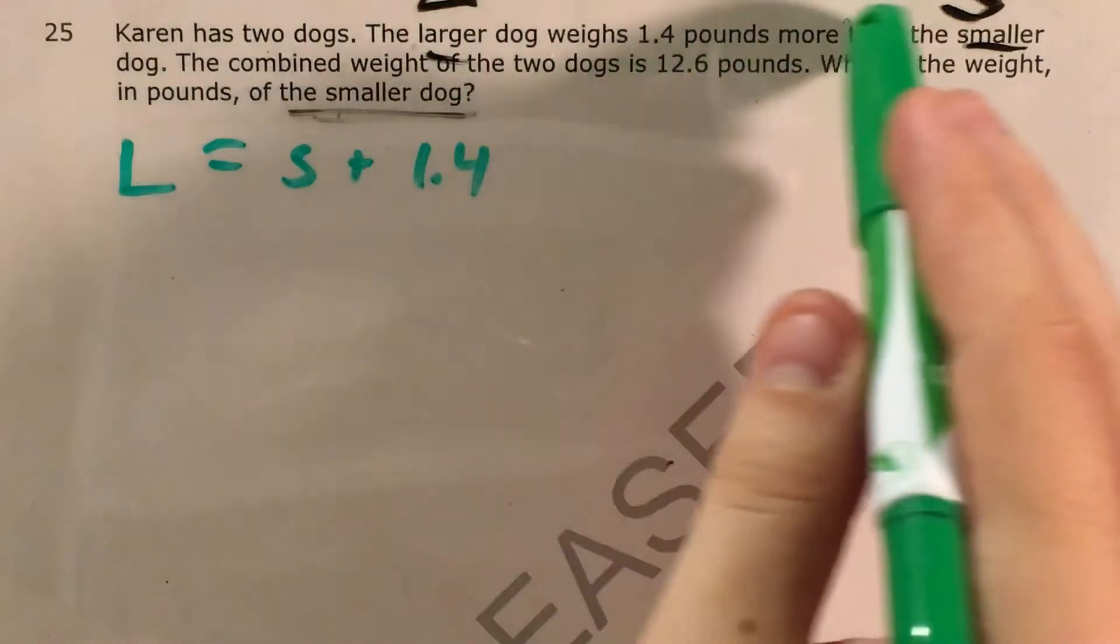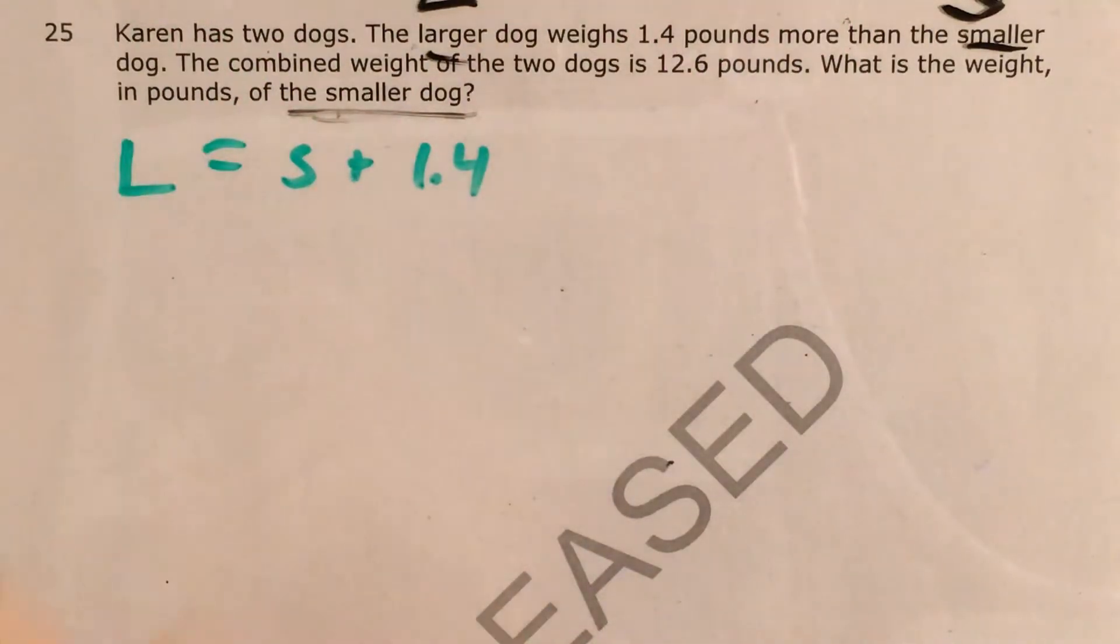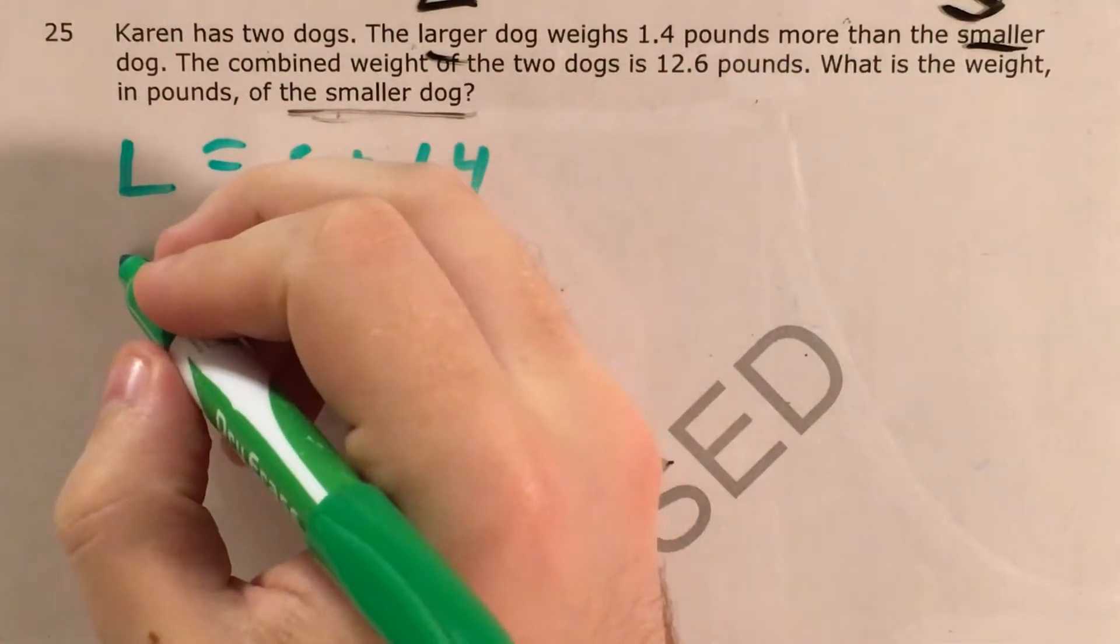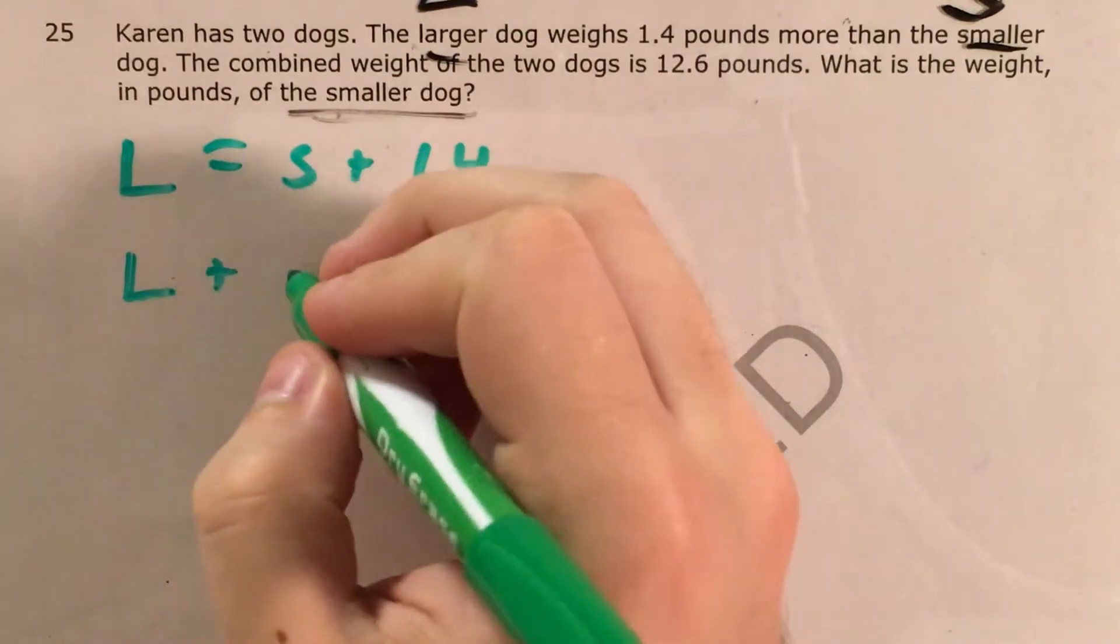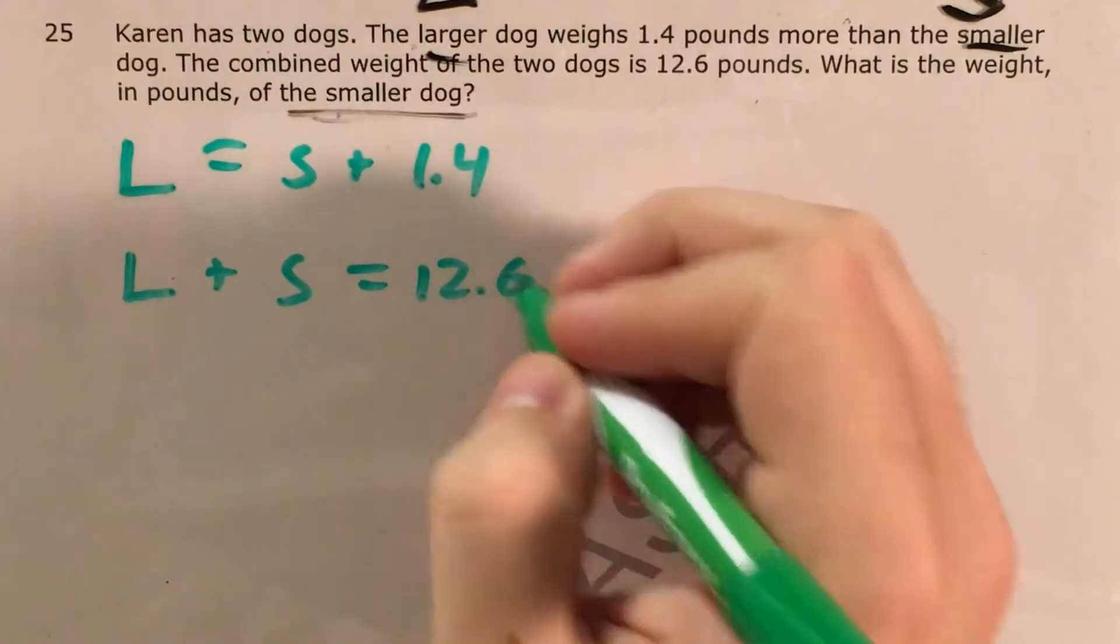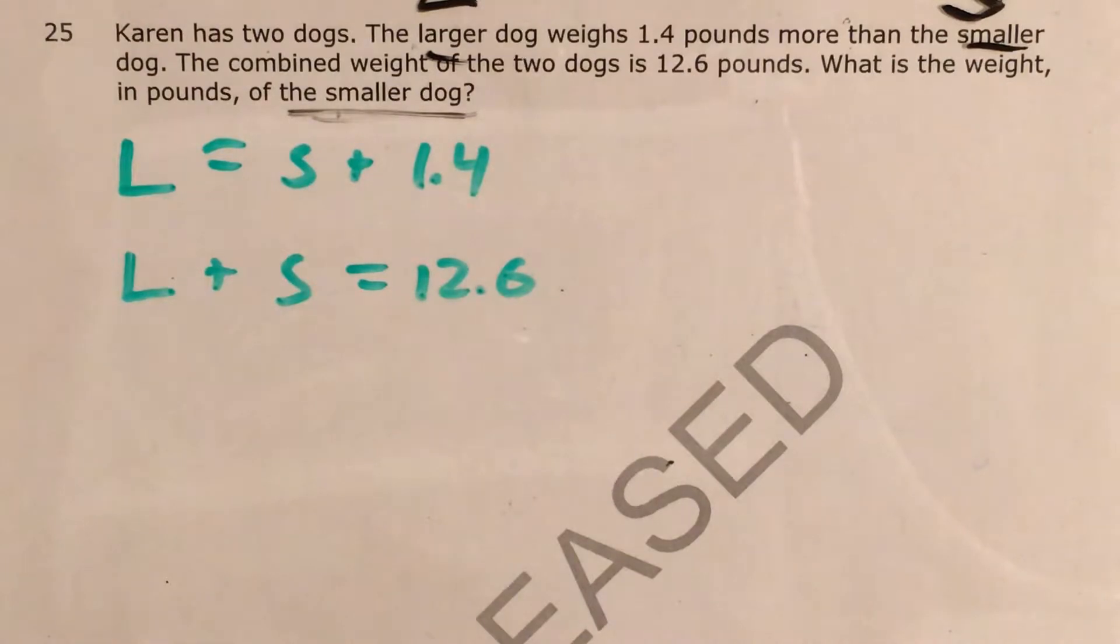We got that from directly translating this sentence. And then we have that the combined weight of the two dogs, so the larger dog plus the smaller dog, is 12.6 pounds. So here are our two equations.